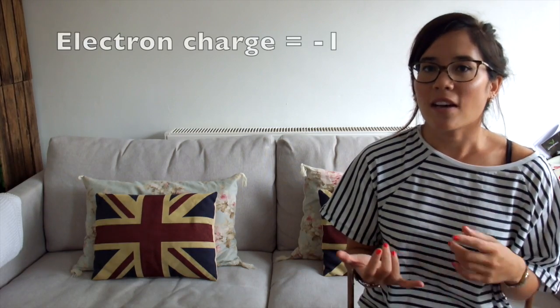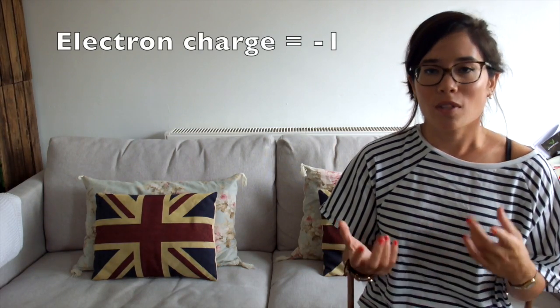Now remember, electrons have a one negative charge, which means that if you lose electrons, the ion's overall charge will be positive. And if you gain electrons, then it will be negative. So if you gain one electron, it will be one negative, or if you gain two, it will be two negative.